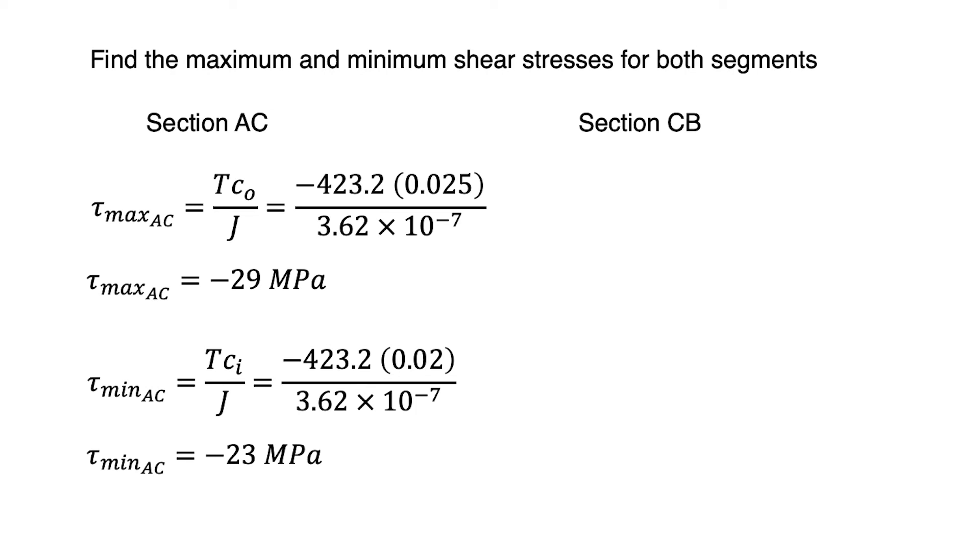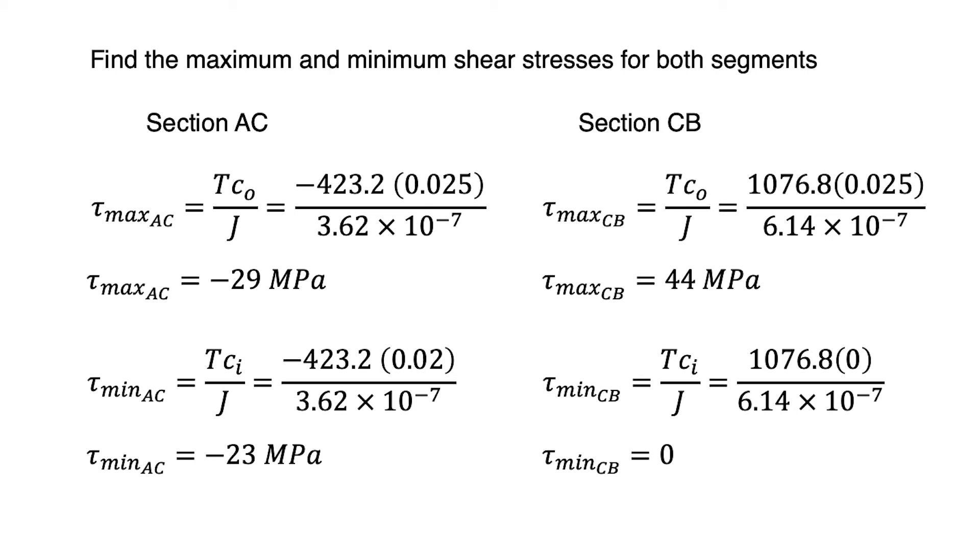And for section CB, τmax(AC) = 44 MPa. And for τmin(CB), since section CB is solid circular shaft, then there is no inner radius for section CB. So τmin(CB) = 0.